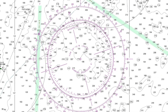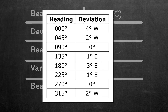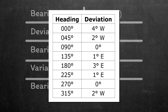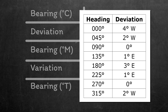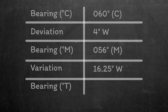It sounds complex, but it's not too bad. Say we get a compass bearing of 060 degrees at 1500. We start our table adding 060 into the compass row. We then read the deviation from the deviation card. If we're currently heading north, our deviation is 4 degrees west, which tells us that all magnetic compass bearings are 4 degrees west of being a magnetic bearing, so we need to subtract 4 degrees to get 56 degrees magnetic. The variation is 16 degrees 15 minutes west, so we subtract 16.25 from 56, which gives 39.75 — so we'll call that 40 degrees true.